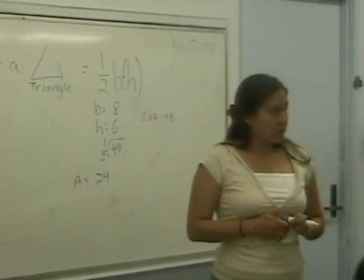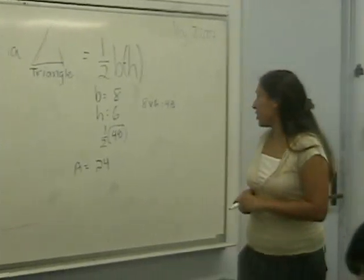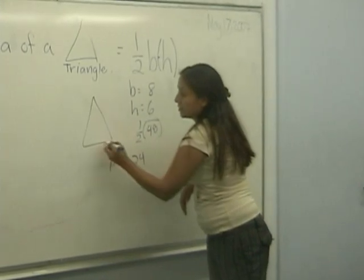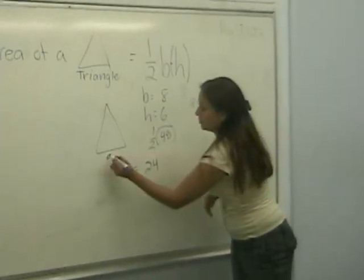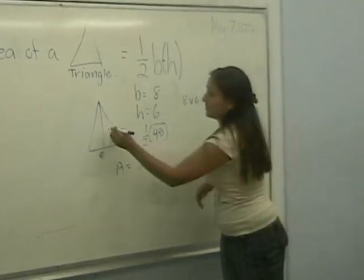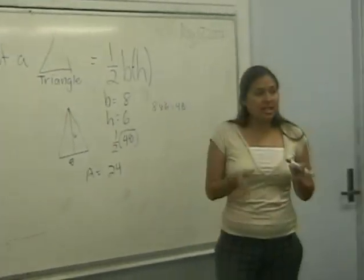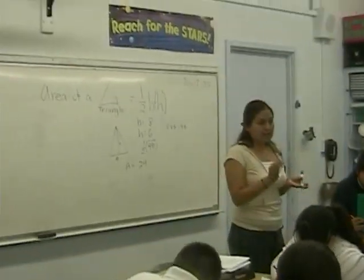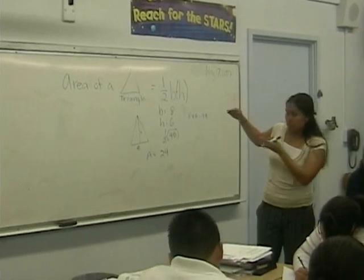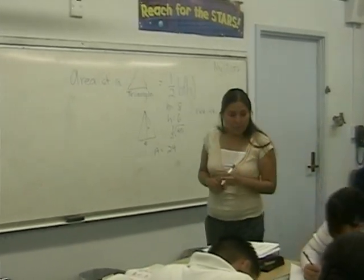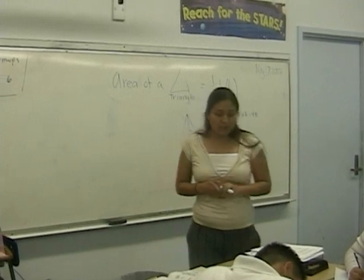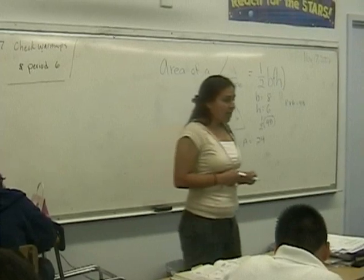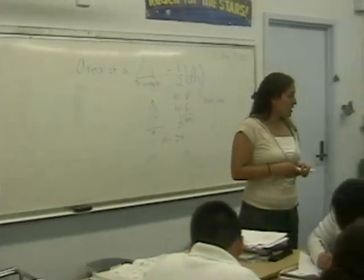Do you have to do the work or just the answer? I would prefer that you guys go ahead and do the work so you can see it, and maybe draw the triangle — that would help you. So the base would be eight and the height is six. Try to draw it as closely as possible. So next we're going to go ahead and finish these problems all the way up to sixteen. You have the remainder of the period.